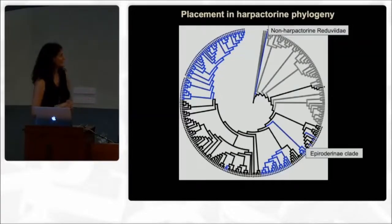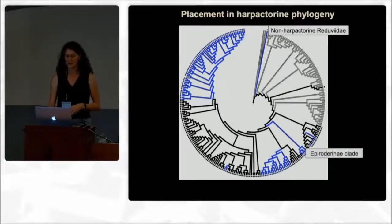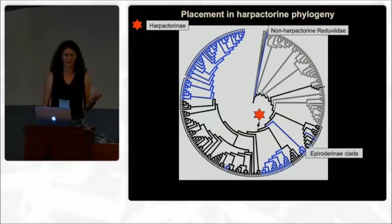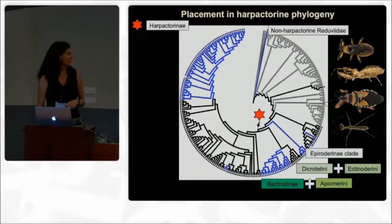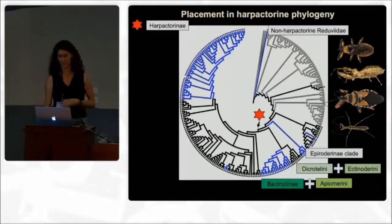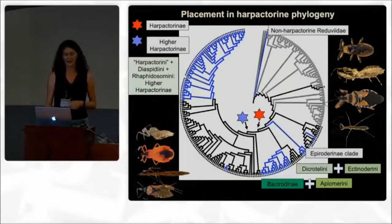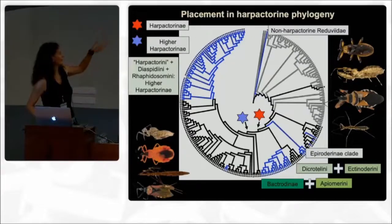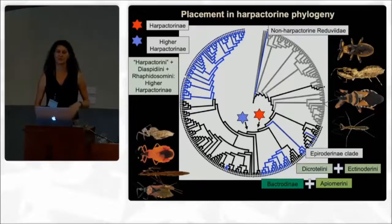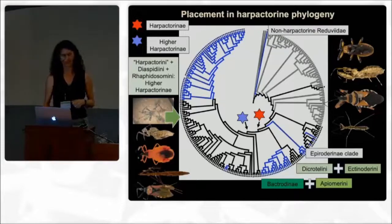Running these combined analyses, this is what we get. Non-Halpacturine Reduviidae are shown in gray on the right. We have the apple water rhine clade as sister group to the Halpacturine. We have Halpacturine, monophyletic, with dicotylines, actinotylines, bactrodines, epiumrhines, the former inner clade, as sister group to what we call the higher Halpacturine — indicated here by the blue star. In the higher Halpacturine we have all the remaining Halpacturines, dsbdines, vavidusomines, and so on. And the fossil goes right here.